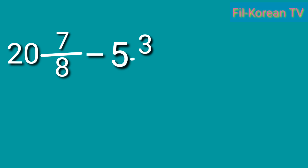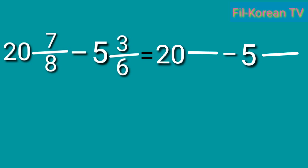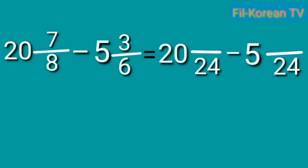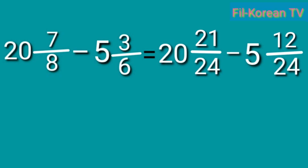20 and 7 eighths minus 5 and 3 sixths equals. Okay, we will do the same steps as in the first example. Now, let's get the LCD of 8 and 6. The LCD of 8 and 6 is 24. Then, divide the LCD by the denominators. 24 divided by 8 equals 3; 3 times 7 equals 21. In the subtrahend, 24 divided by 6 equals 4, times 3 equals 12.